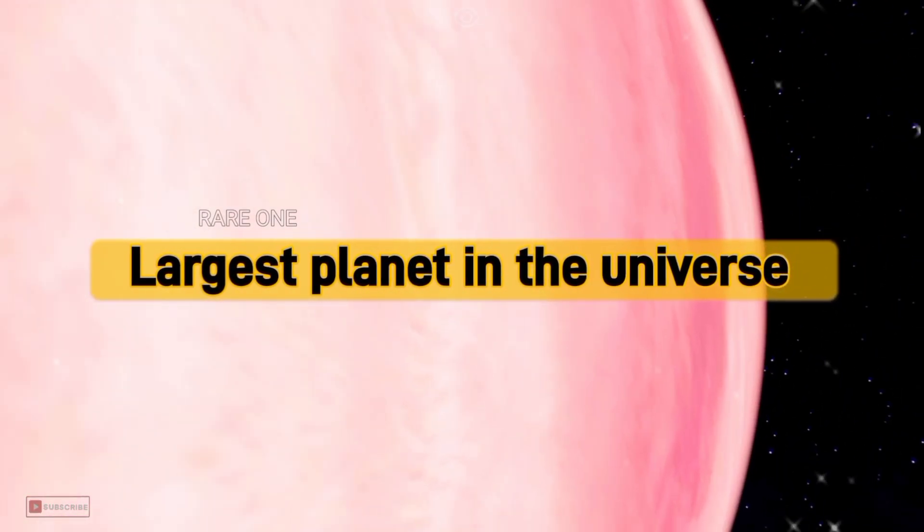In the vast expanse of the cosmos, there exists a behemoth among planets, ROX's 42BB. Discovered in 2013, this gas-giant exoplanet orbits a binary star system, situated a staggering 500 light-years away from our home planet Earth.